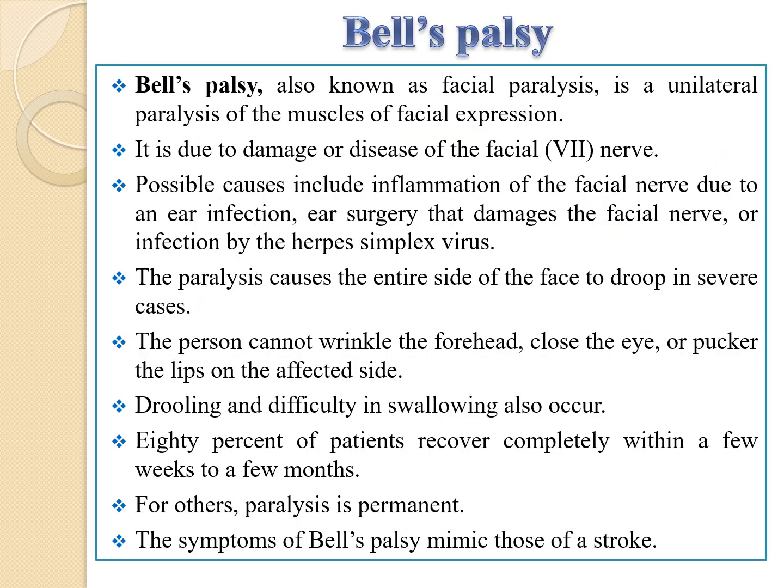One important pathological condition related to facial muscles is Bell's palsy. 'Palsy' means paralysis, so Bell's palsy, also known as facial paralysis, is a unilateral paralysis of the muscles of facial expression due to damage or disease of the facial nerve — the seventh nerve. The paralysis causes the entire side of the face to droop in severe cases; the person cannot wrinkle the forehead, close the eyes, or pucker the lips on the affected side. Drooling and difficulty swallowing also occur. Eighty percent of patients recover completely within a few weeks to months; for others, paralysis is permanent. The symptoms of Bell's palsy mimic those of a stroke.